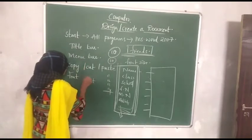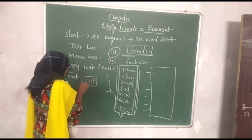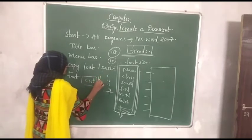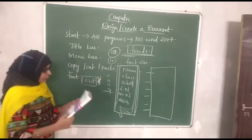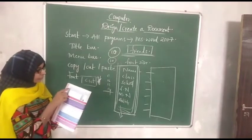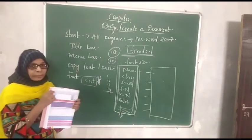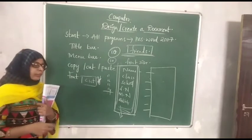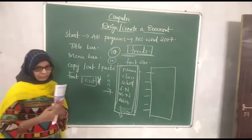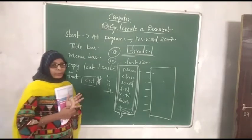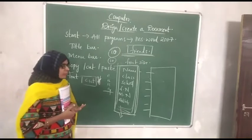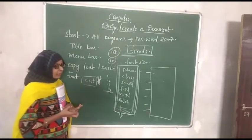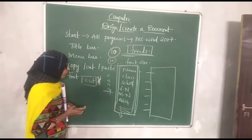Then what about Cut? We see a picture of scissors here — this symbol means Cut. Why do you use scissors? To cut cloth, paper, etc. Similarly, what do you cut here? Let us learn that. Suppose you want to rearrange your content — for example, you want Father Name to appear first or you want to move Hobby to appear first.